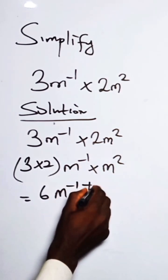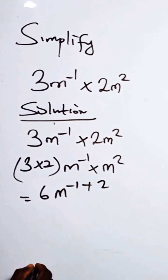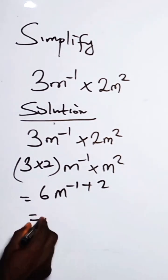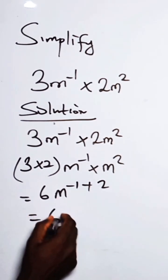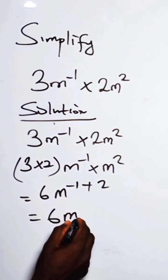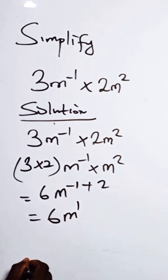So we have minus 1 plus 2. So here we have this as 6. So for m, so for minus 1 plus 2, we have to be 1.